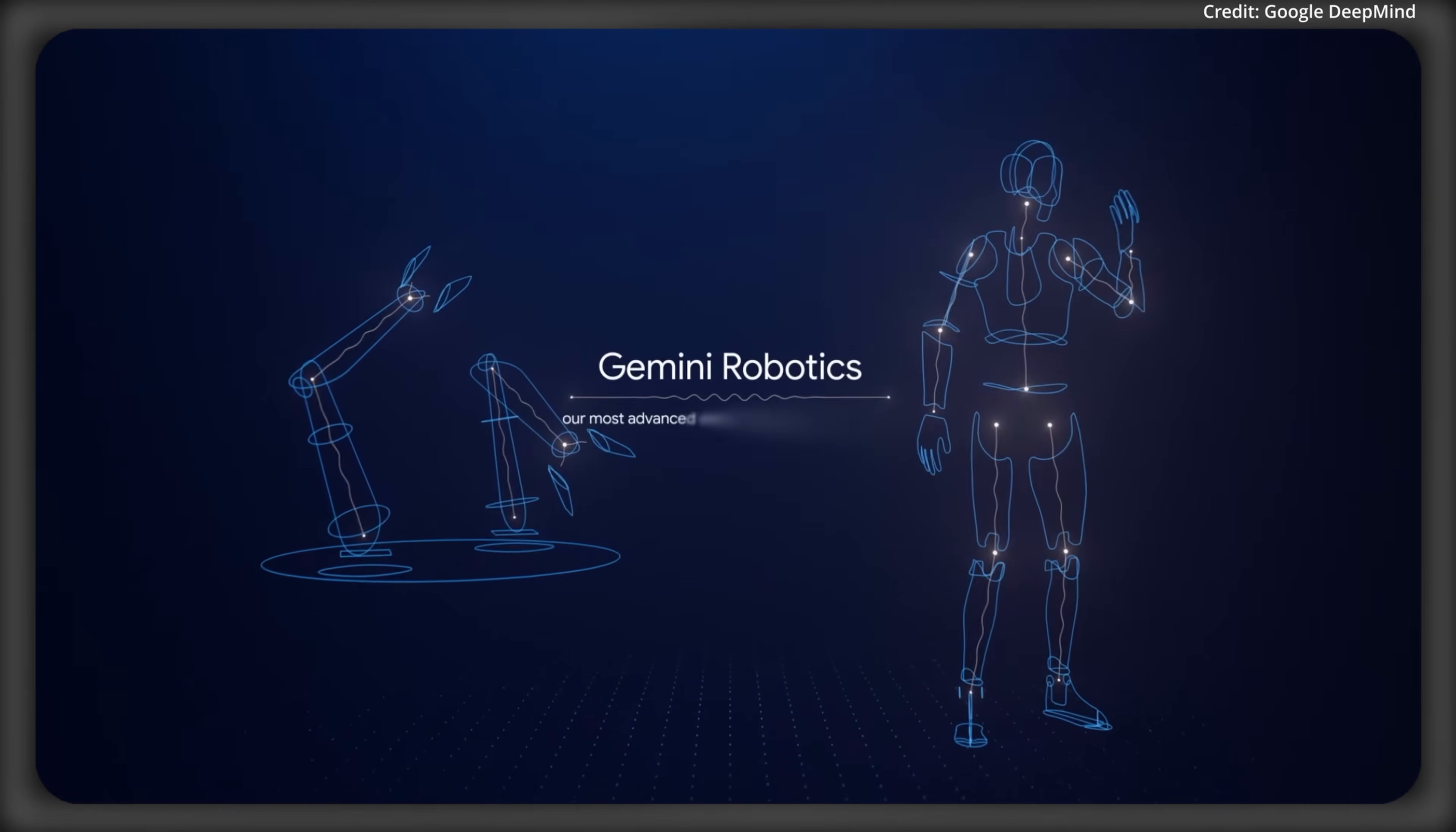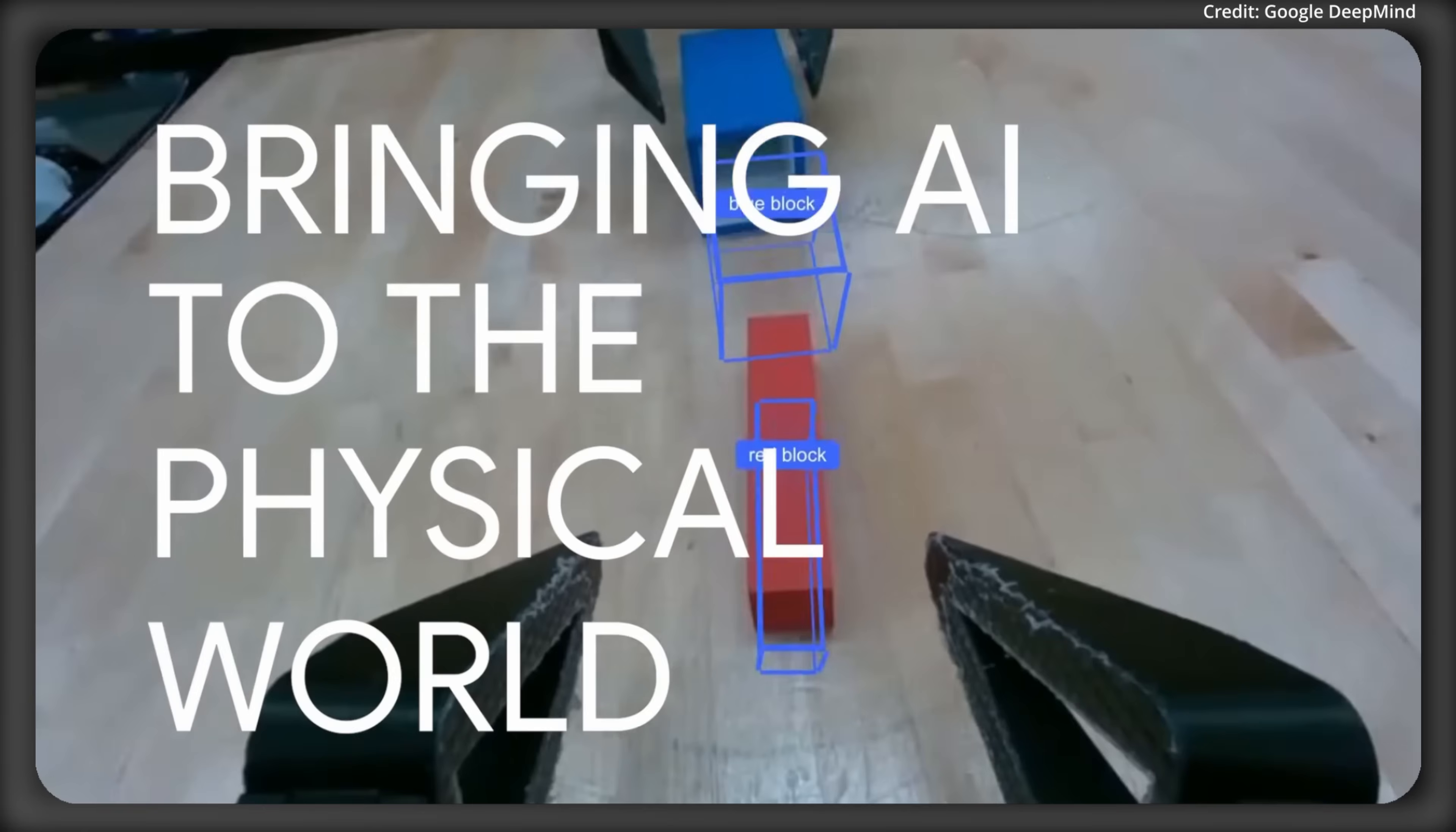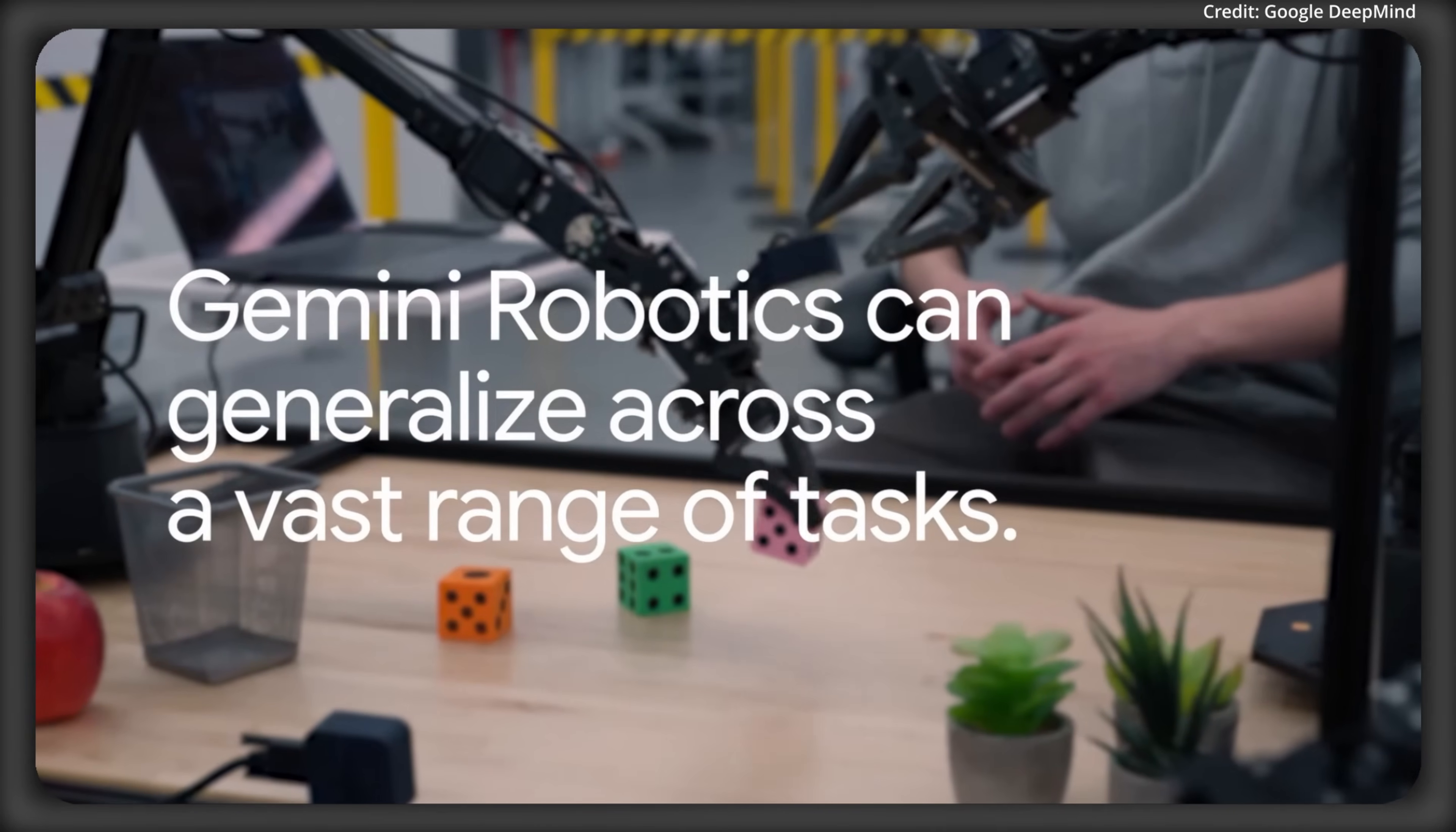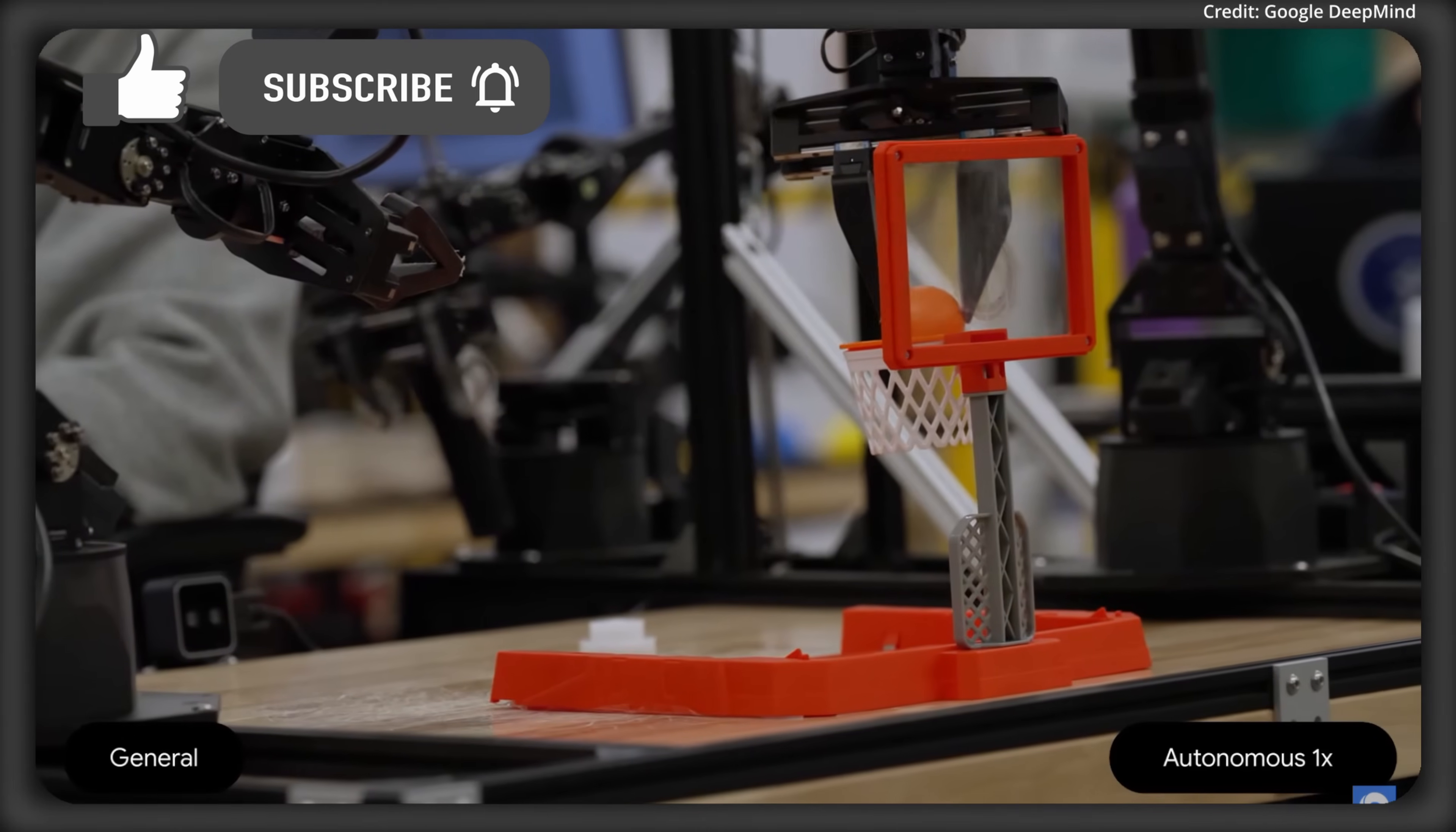But let's start out with Gemini Robotics first. Gemini Robotics is their most advanced vision language action model, and it's using Gemini 2.0 as its brain. Let's start out with the generality. Gemini Robotics uses Gemini's world understanding to generalize across new situations that it's never seen before, to solve a wide variety of tasks right out of the box.